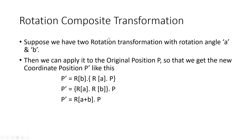So let's say you have got two rotation transformations. The first one is with angle A and the second one is with angle B. So instead of performing the rotation operation twice, what we can do is perform rotation composite transformation. Basically what we are doing is combining the two rotation operations into a single rotation matrix and then performing the rotation operation only once.